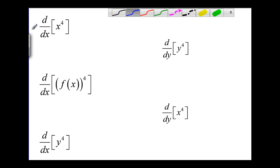If we start at the beginning here, d/dx of x to the fourth, that's easy. d/dx means you're taking the derivative and the variable is x and you're taking the derivative of x to the fourth which is just the power rule that's 4x cubed.